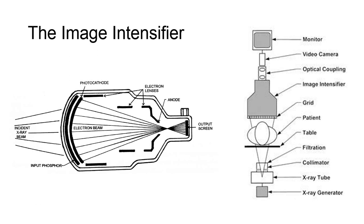The primary components of the image intensifier are the input phosphor, the photocathode, the electrostatic lenses, the accelerating anode, and the output phosphor.